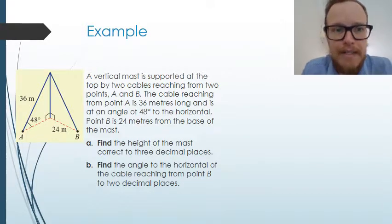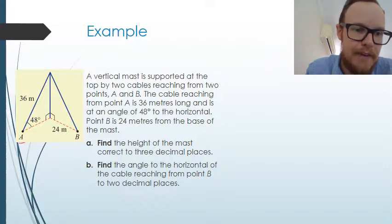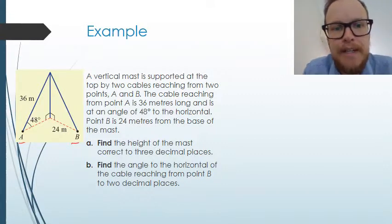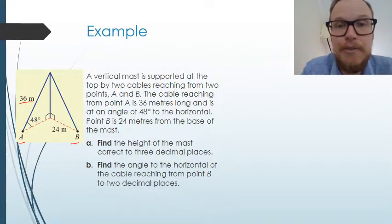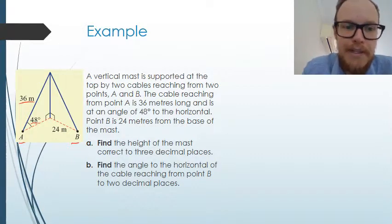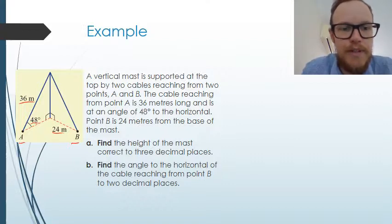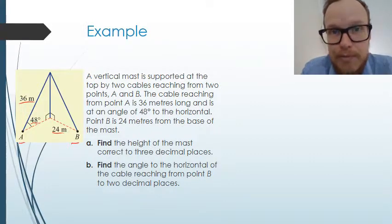If we have a look at an example here, we've got a vertical mast supported at the top by two cables that reach from two points A and B. The points are given here A and B on the side there. The cable reaching from point A is 36 meters long and it is at an angle of 48 degrees to the horizontal. Point B is 24 meters from the base of the mast. First question that we need to answer is we need to find the height of the mast correct to three decimal places.